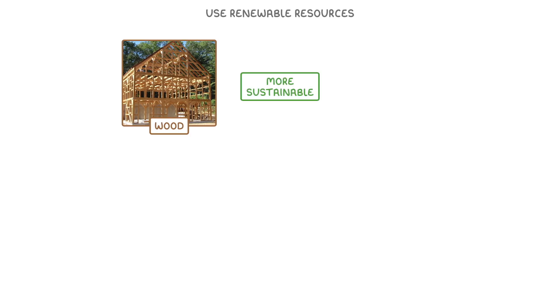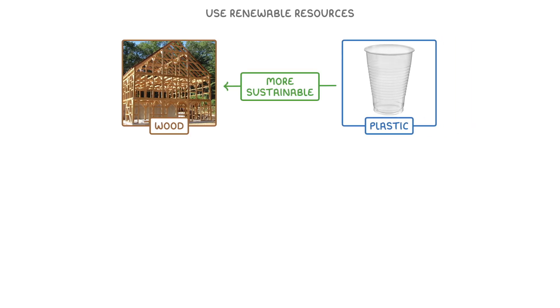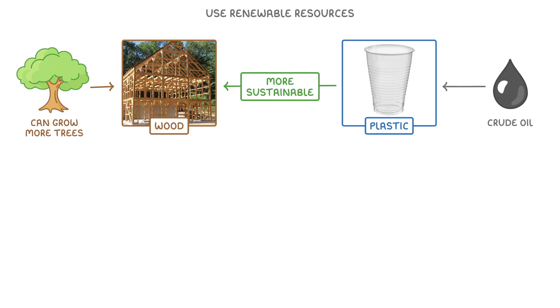One way that we can develop more sustainably is to use renewable resources rather than finite resources. For example, making products out of wood may be more sustainable than making them out of plastic, because we can grow more trees, whereas plastic has to come from crude oil, which is a finite resource.